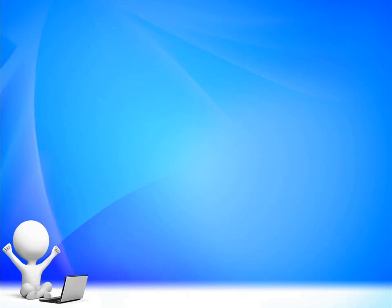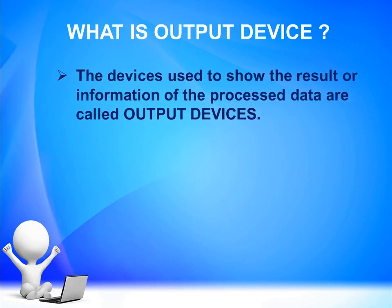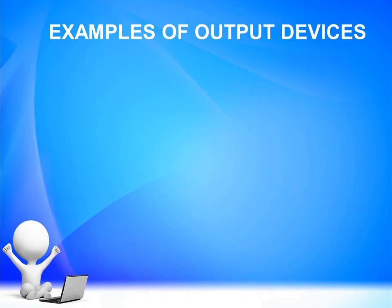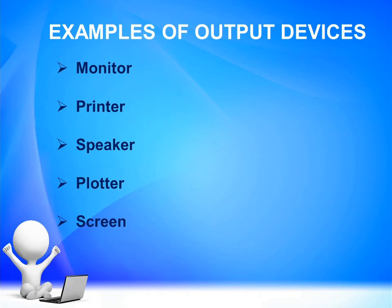Let us discuss output devices. The devices used to show the result or information of the processed data are called output devices. Examples of output devices include monitor, printer, speaker, plotter, and screen. These all are examples of output devices.